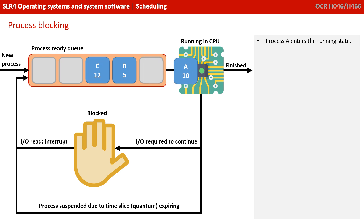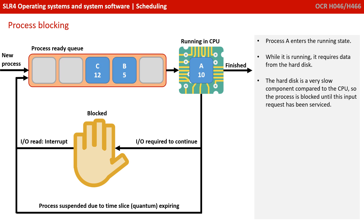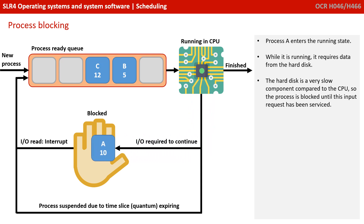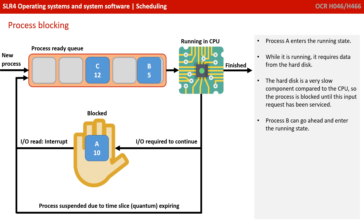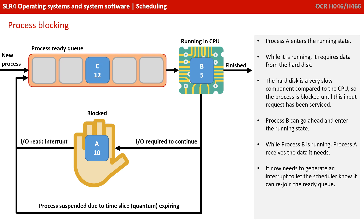Before we move on, let's consider process blocking. Process A enters the running state. While it's running, it requires data from the hard disk. The hard disk is incredibly slow compared to the CPU, so the process is blocked until this input request has been serviced. Process B can now go ahead and enter the running state. While Process B is running, Process A receives the data it needs. It now needs to generate an interrupt to let the scheduler know that it's ready to rejoin the queue.